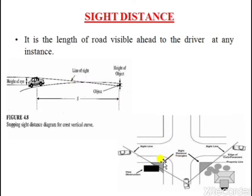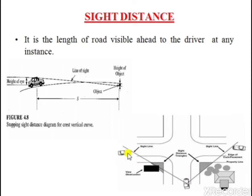Similarly, in the second figure, there is a restriction for sight distance at an uncontrolled intersection. A vehicle is approaching from one side and another vehicle from the other end. The driver from one approach is able to sight a vehicle from another approach proceeding towards the intersection, but the line of sight is interrupted by the intersection, so the driver cannot see the oncoming vehicle.